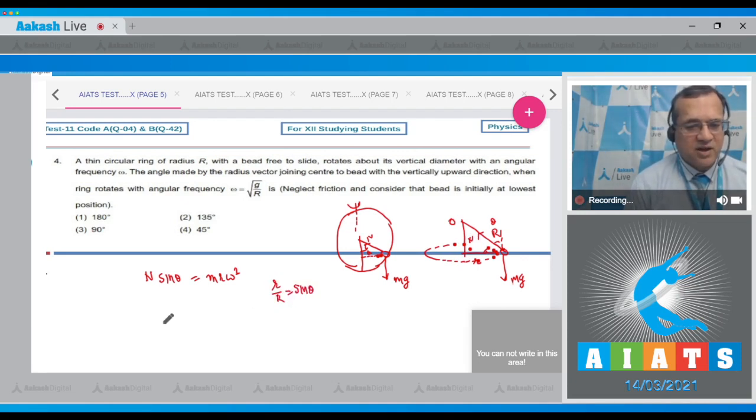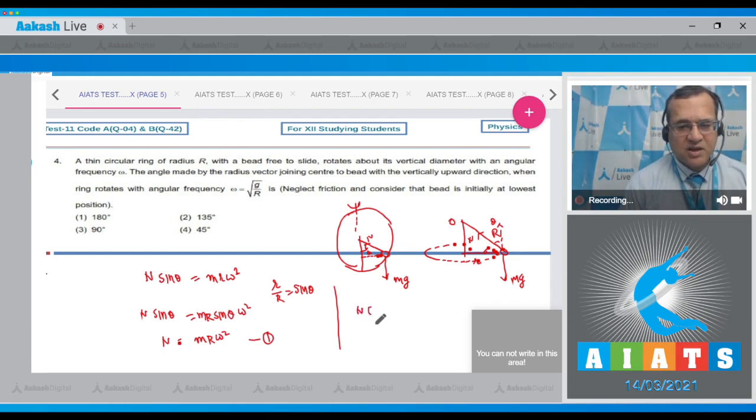From the geometry, you find that small r by capital R equals sin(theta). So if I fill up here, then N*sin(theta) equals m*R*sin(theta)*omega^2, so N becomes equal to m*R*omega^2. Now let's take the vertical component. The vertical component N*cos(theta) will be equal to the weight.